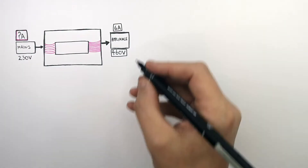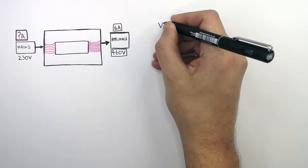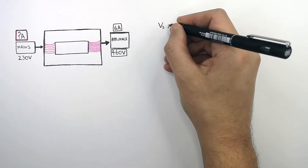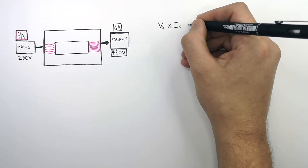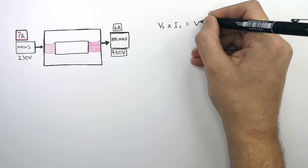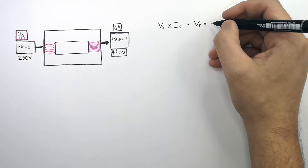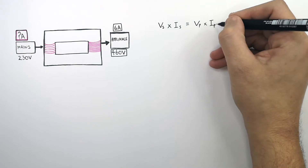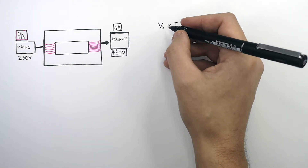We need to recall the equation: the potential difference across the secondary coil times the current across the secondary coil equals the potential difference across the primary coil times the current across the primary coil. Let's now substitute in the numbers.